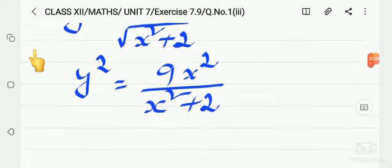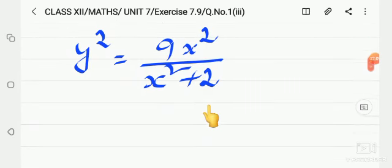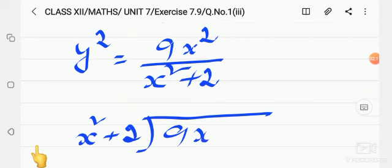So we square both sides to remove the square root. Now this we can divide. x square plus 2 divides 9x square. On the right side there's no constant, so we'll put 0.